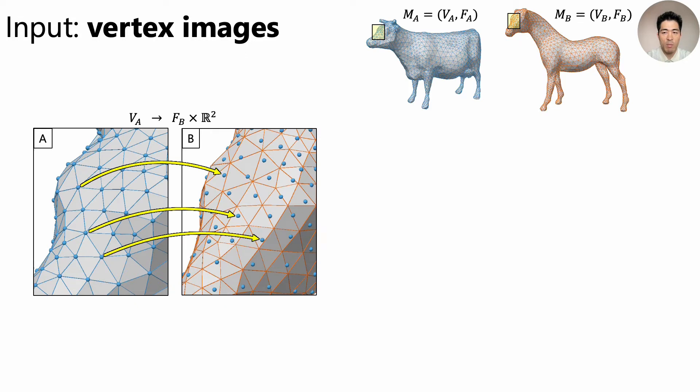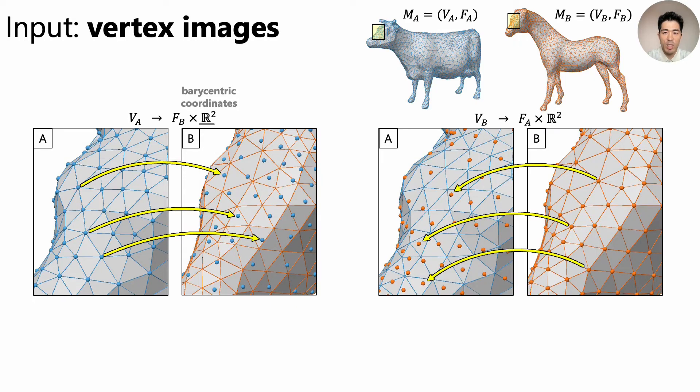So here comes our method called compatible intrinsic triangulations. First of all, we are given a pair of triangle meshes of the same genus A and B. In addition to these, we take as input something called vertex images. It's simply an assignment to each vertex of A, a position on the surface B, expressed using barycentric coordinates. We take another vertex image in the opposite direction as well.